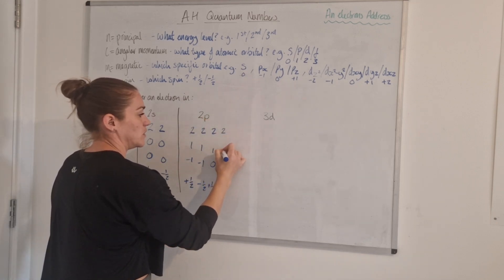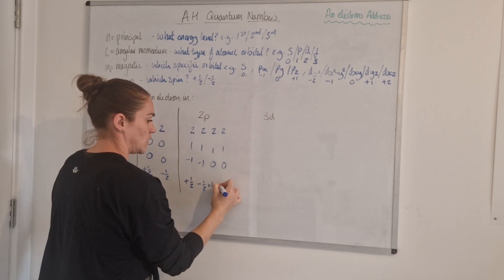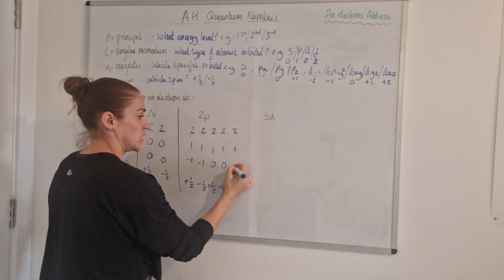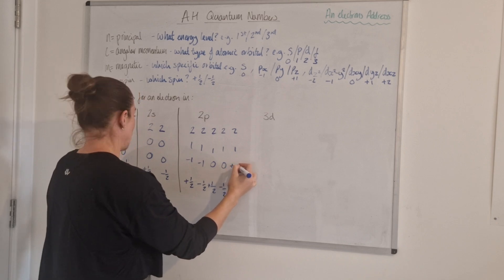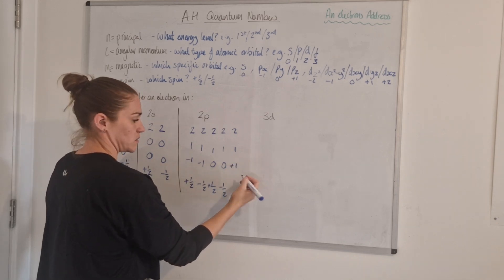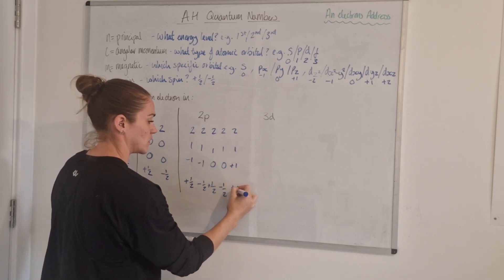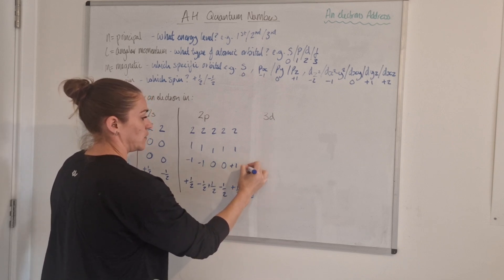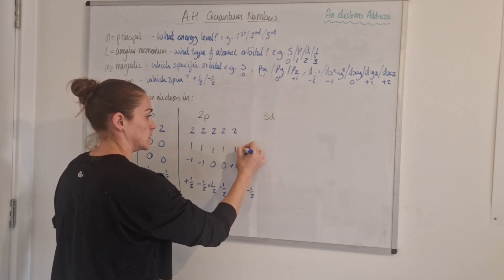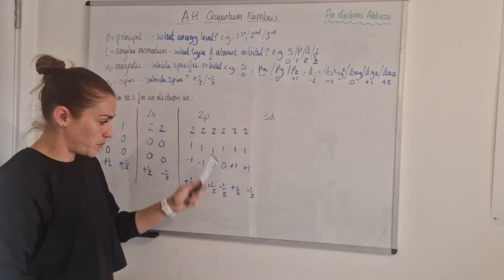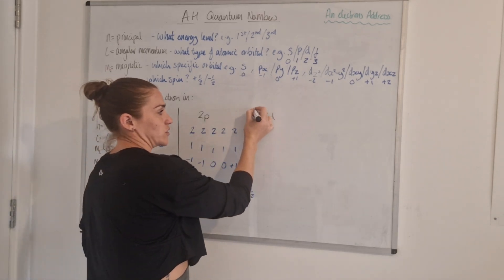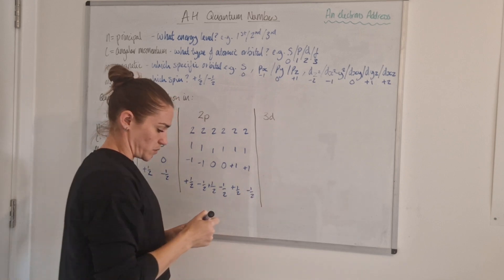So it's still the second energy level, still a p orbital, but ml could be plus 1 with spin plus a half, or minus a half within the pz. That gives the six possible quantum number sets for an electron occupying a 2p subshell.